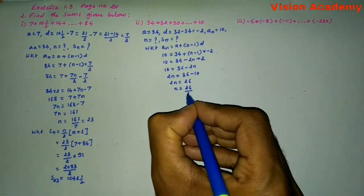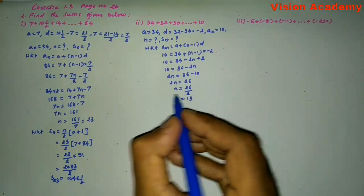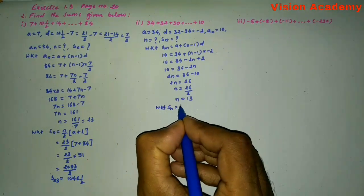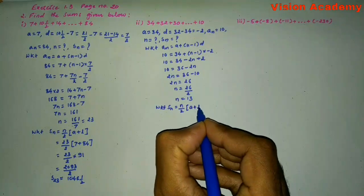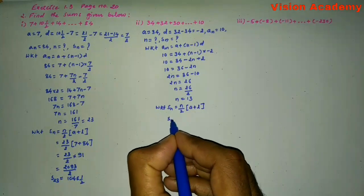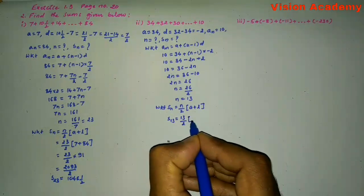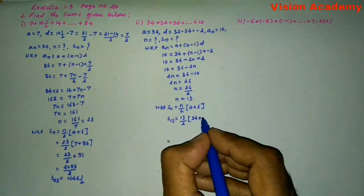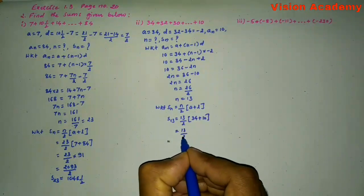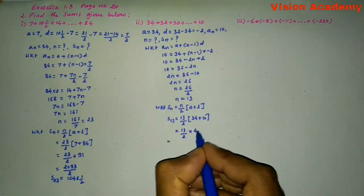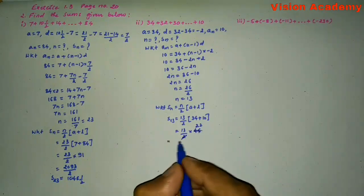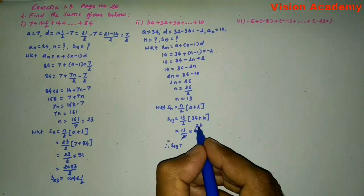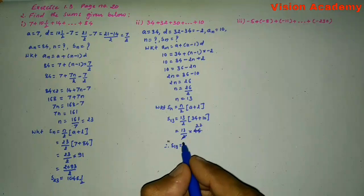N equals 26 divided by 2, so N is equal to 13. Now we know that SN equals N by 2 into (A plus L). Here, that is 13 by 2 into (34 plus 10), which is 13 by 2 into 44. Since 2 goes into 44 giving 22, S13 equals 13 into 22, which equals 286.